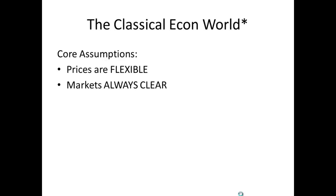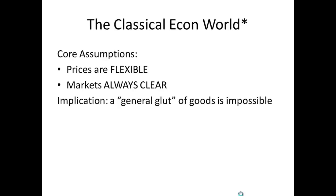We would never expect to see persistent surpluses or shortages in any good, whether we're talking input markets — land, labor, capital — or output markets, consumer goods. Therefore, this indicates if markets work really well, we could never have what they refer to as a general glut of goods — overproduction of goods, which would result in a surplus, which would result in a decrease in production in any industry or in the economy in general.